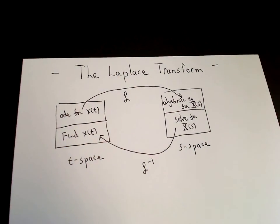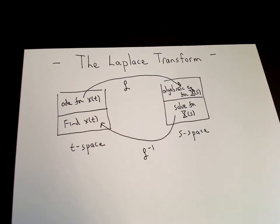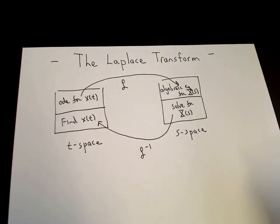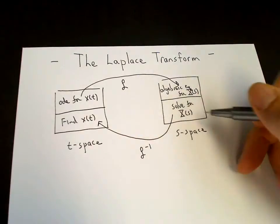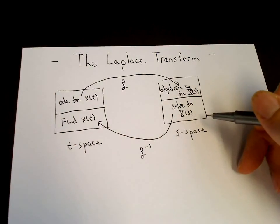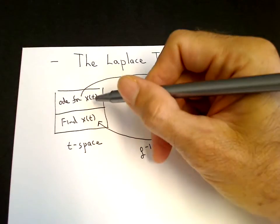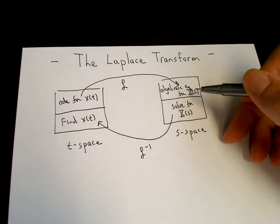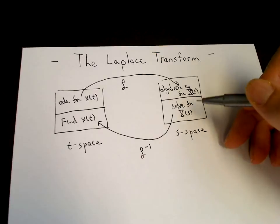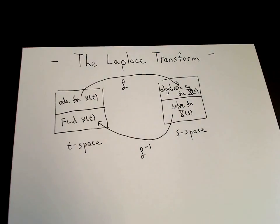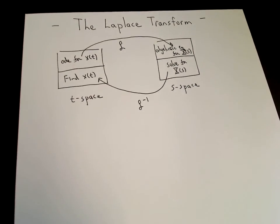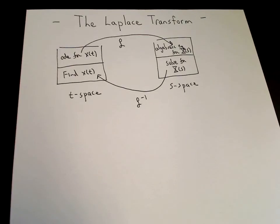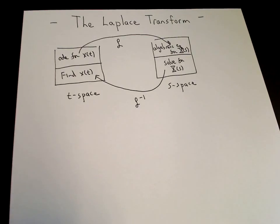So the technique is such that if the equation is easier to solve in S-space, then we transform the ODE to S-space and solve the equation, and then transform back to t-space. So the question is: what is the Laplace Transform that enables us to do this?